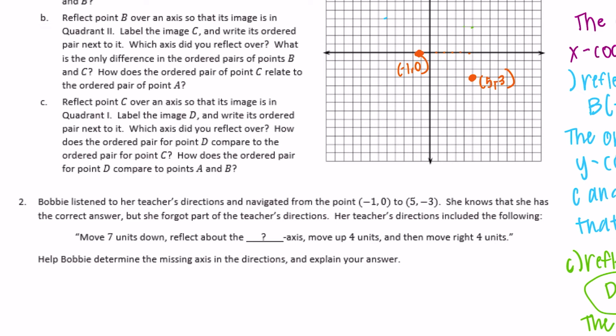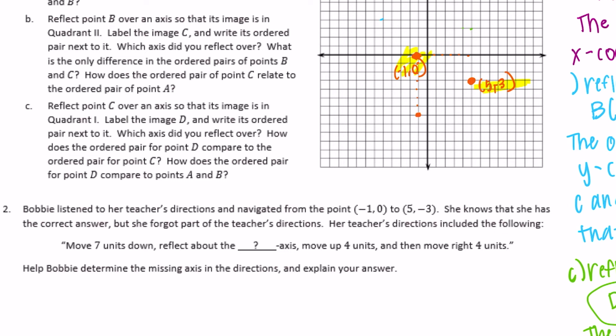Her teacher's directions included: move seven units down, reflect across a missing axis, move up four units, and move right four units. Starting from (-1, 0), moving seven units down: one, two, three, four, five, six, seven — that brings us to (-1, -7).